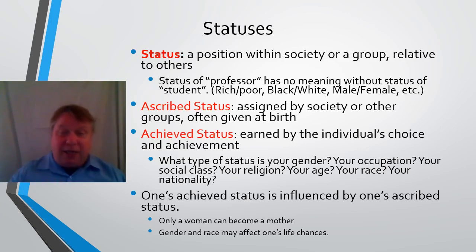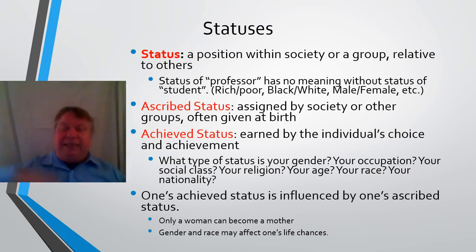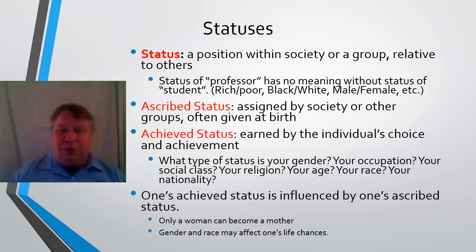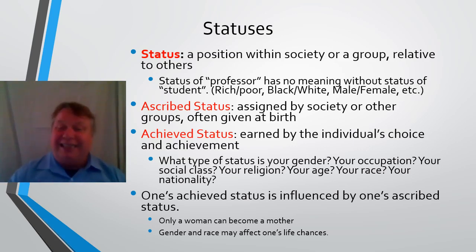Being white is another ascribed status. But for example, I could have been born king — if I'd been born king, it wouldn't have anything to do with my physical status, whether I was white or black. It would simply be that my father was king, therefore I'm king. So ascribed status doesn't necessarily have anything to do with your physical state, although that may be the excuse used to assign you to that status.